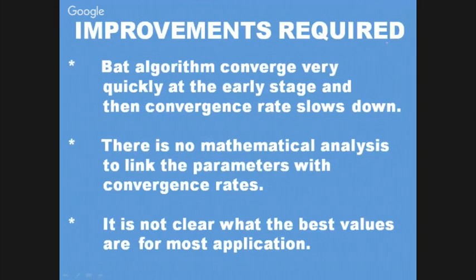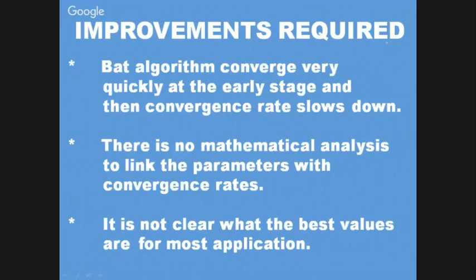Everything has pros and cons, and the improvements needed for BAT are: for small-sized images the algorithm is very precise and efficient, but for very large images the convergence rate slows down — it is not linearly proportional; if a small image takes time T1, a double-size image will take more than 2×T1. For various applications, different fitness functions are needed, requiring complete knowledge of each field. As it is a new algorithm still being researched, it is not yet clear what the best parameter values or best pixel quality will be for all images.